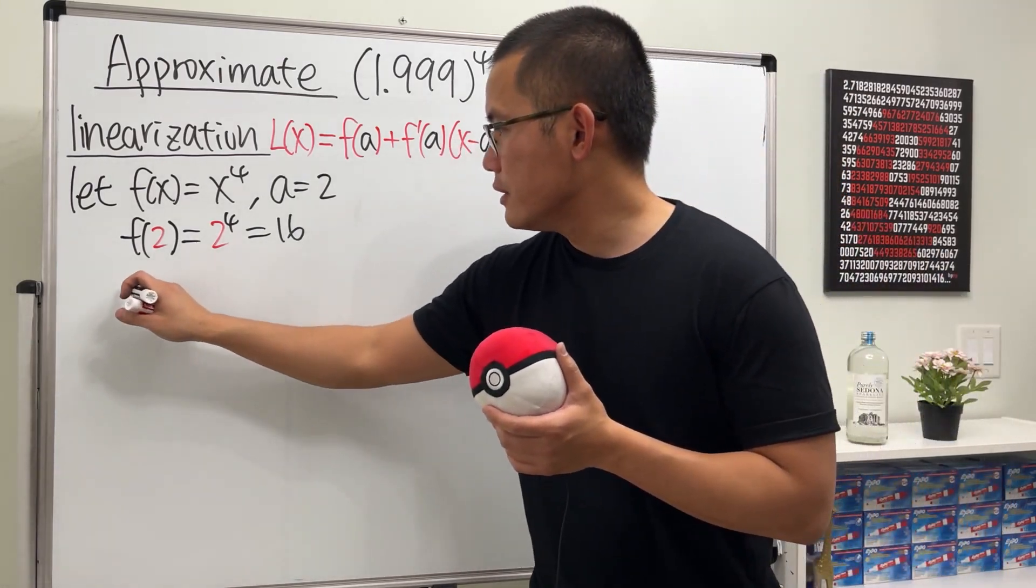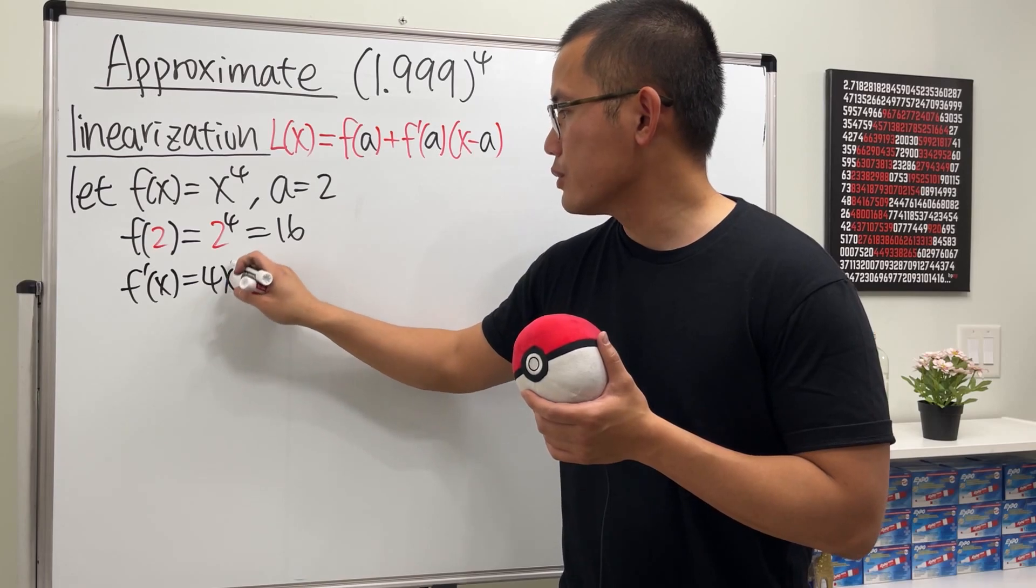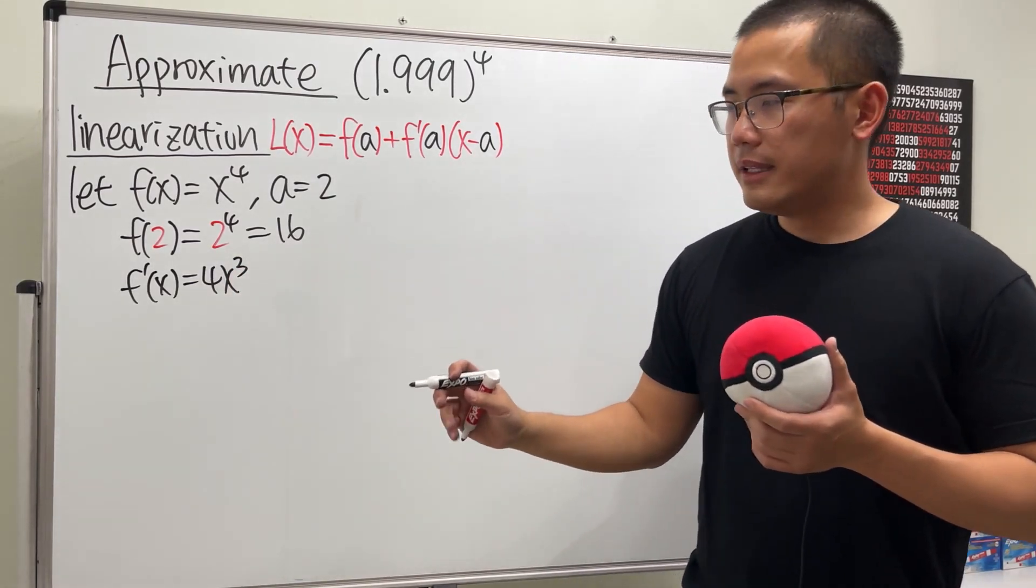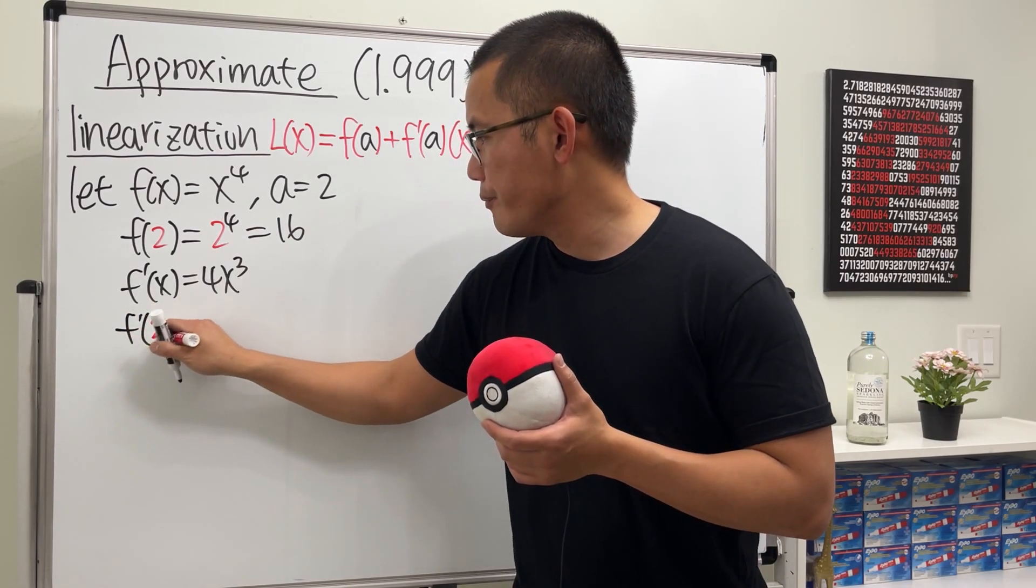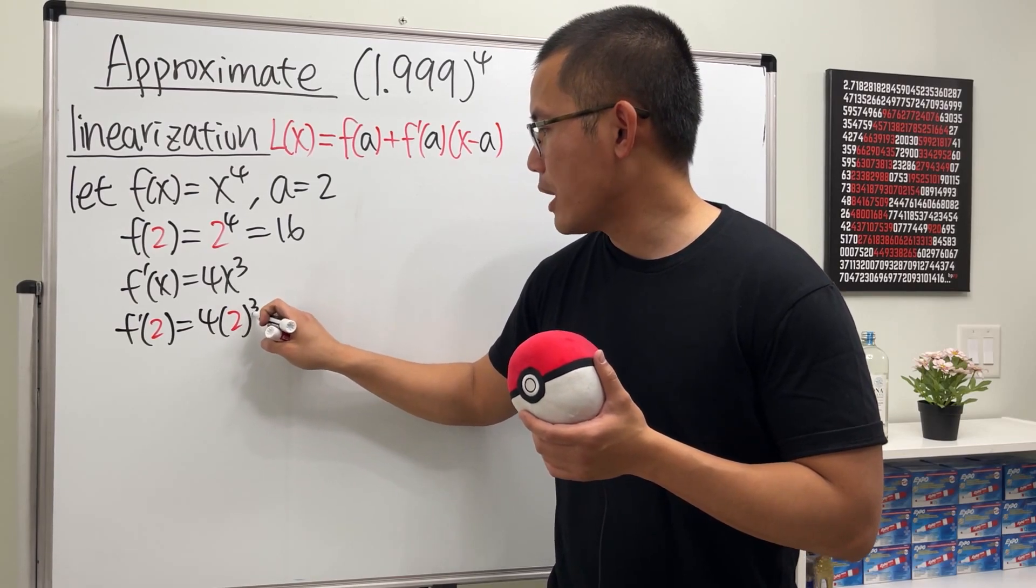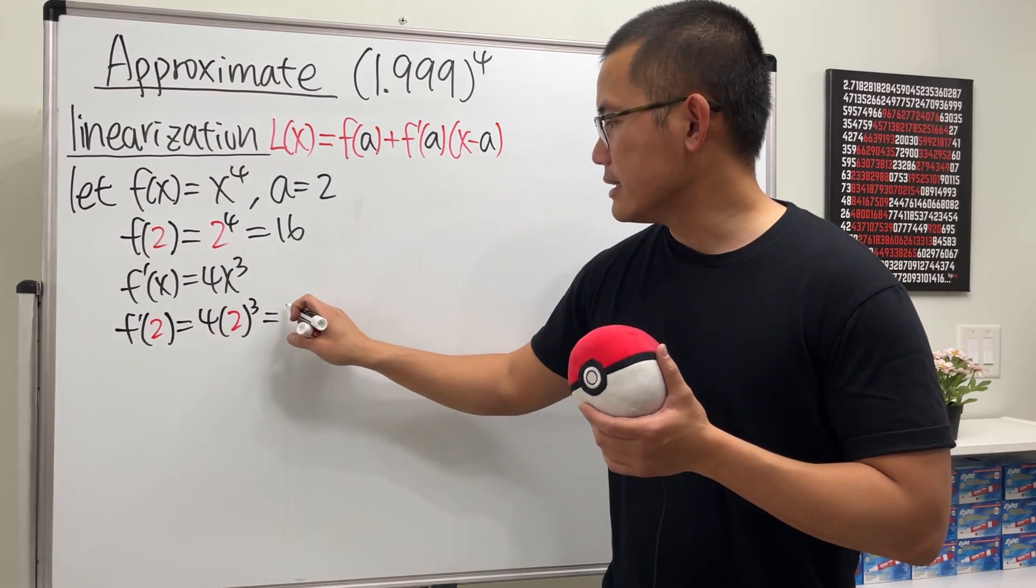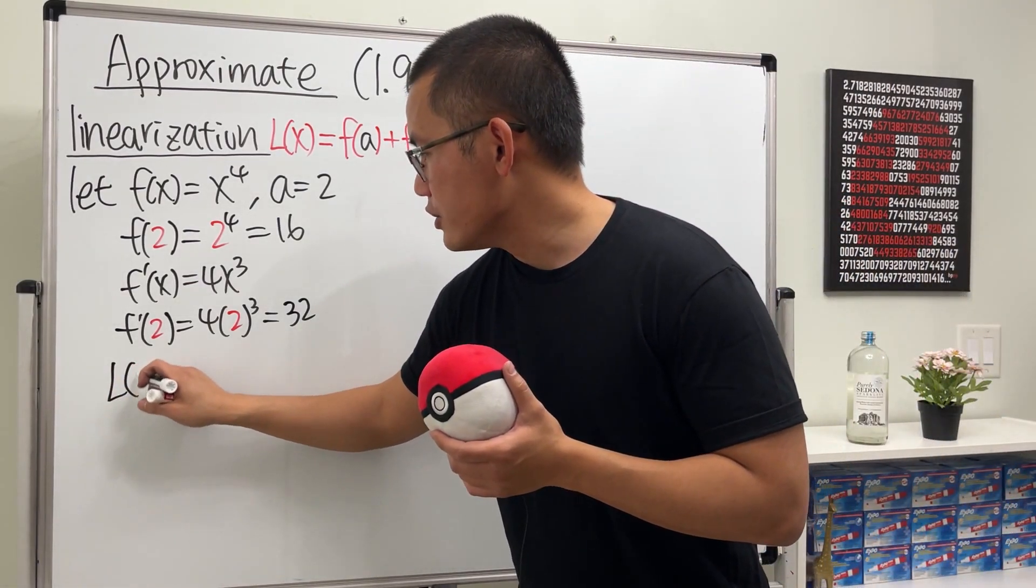Next, we need the derivative. So f'(x) is 4x^3, and then we plug in 2. f'(2) is just 4 times 2^3. That's 8 times 4, which is 32.